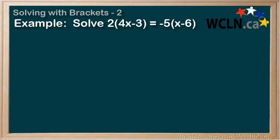Example 1: Solve 2 times 4x minus 3 equals negative 5 times x minus 6. Now we could stop and consider dividing out the 2, but we notice that 5 divided by 2 isn't a nice number, so let's go ahead with distribution.